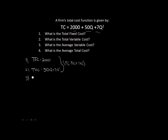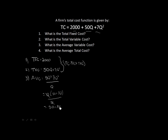Question three: what is the average variable cost, denoted AVC? To get an average, we simply divide by the quantity q. Our total variable cost is 50q plus 7q squared, and dividing by q, we can simplify: taking q out from the numerator gives us q times (50 plus 7q) divided by q, so the q's cancel out and we are left with 50 plus 7q, which is our average variable cost.